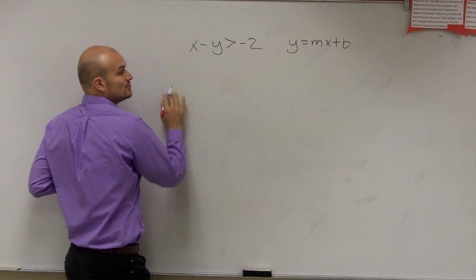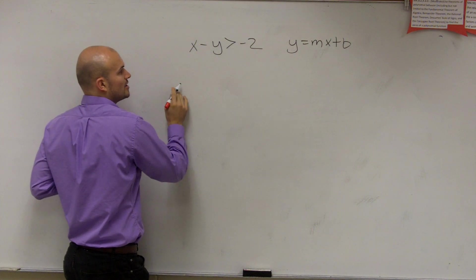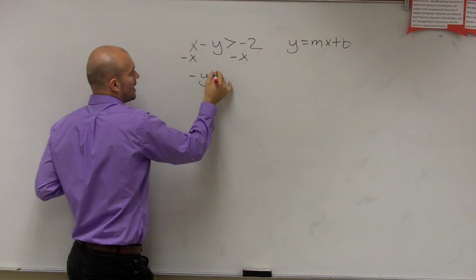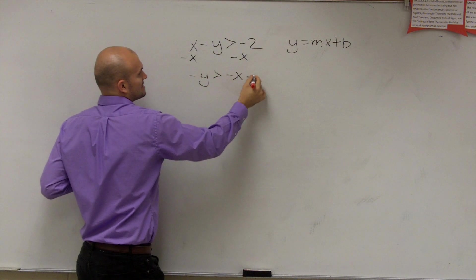So to put it in this form, I do need to isolate my variable y. So I'm going to subtract the x on both sides, and I get negative y is greater than negative x minus 2.